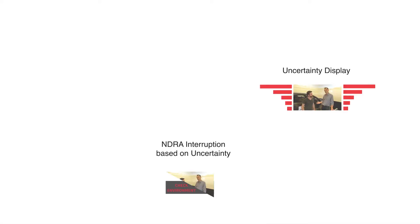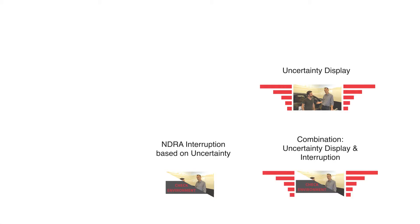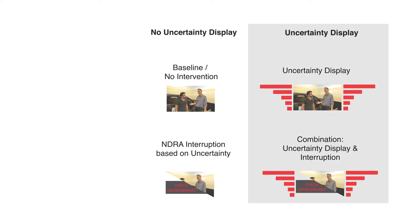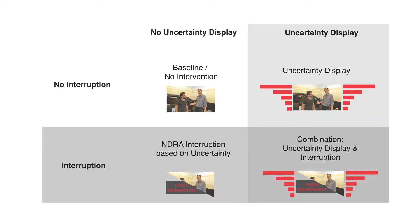All three interventions — the uncertainty display, the interruption of the non-driving task, and the combination of both — are compared against a baseline with the non-driving activity in the entertainment display without any support. The treatments are organized in a two-by-two design, with the uncertainty display in one dimension and the interruption in the other.